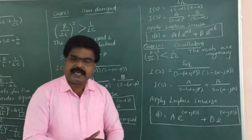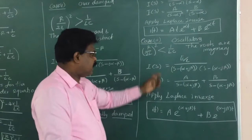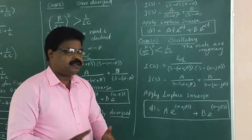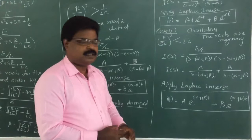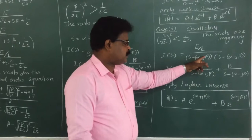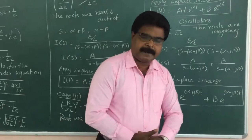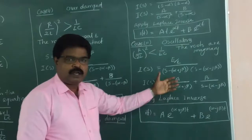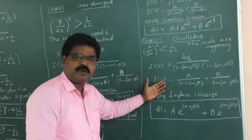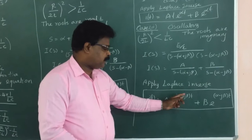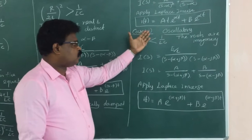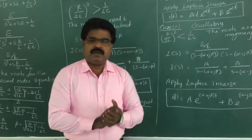Case 3 is the oscillatory condition, when R by 2L whole square is less than 1 by LC, giving imaginary roots: alpha plus J·beta and alpha minus J·beta. Substituting into I of S and applying partial fractions: I of S equals A divided by S minus (alpha plus J·beta), plus B divided by S minus (alpha minus J·beta). Applying Laplace inverse: I of T equals A·e^((alpha+Jbeta)T) plus B·e^((alpha−Jbeta)T). In a problem, you will encounter any one of these three conditions.